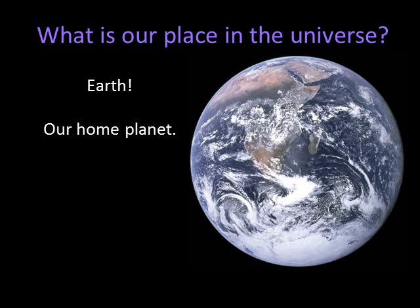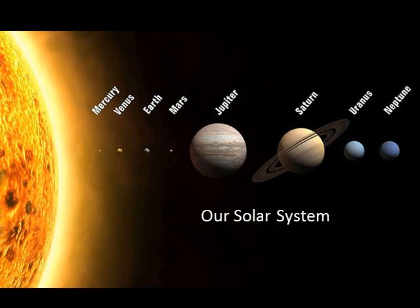We live on planet Earth, and Earth is a planet in our solar system. The solar system consists of the sun, the planets and their satellites, and many other smaller objects such as asteroids and comets.